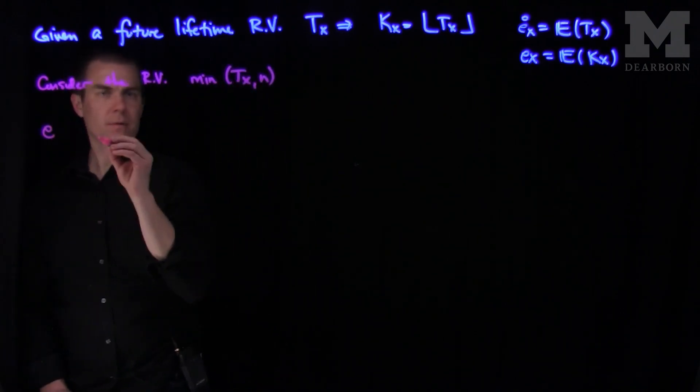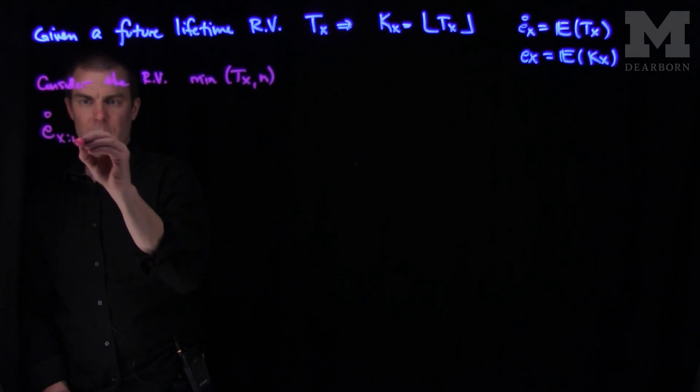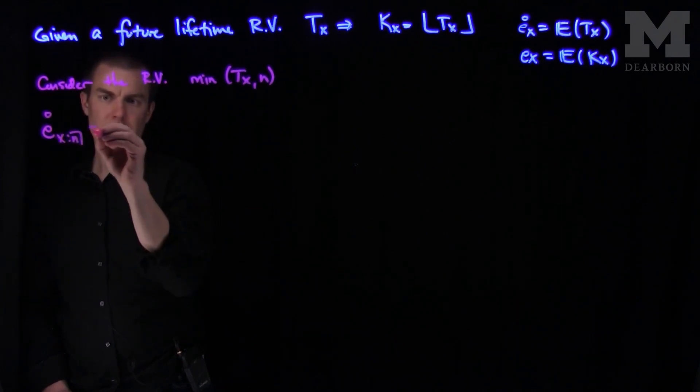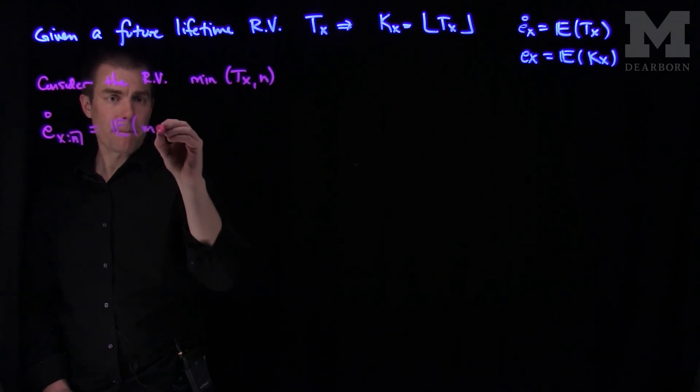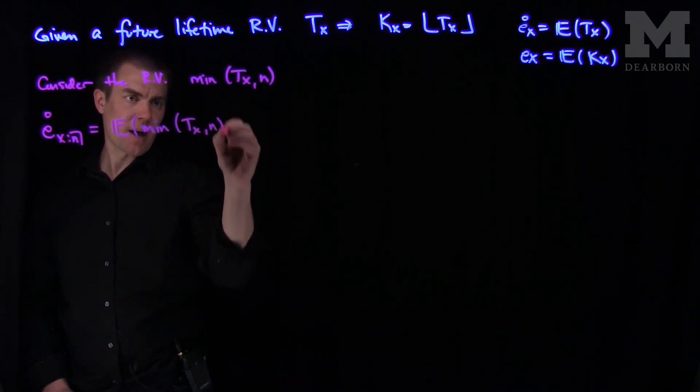If I put a circle on top that will be continuous. Ex n circle is by definition the expected value of the minimum of tx and n.